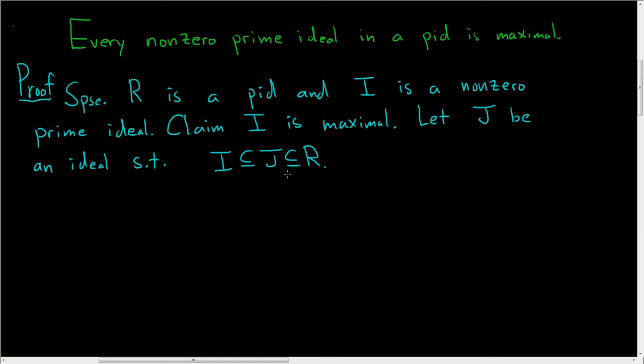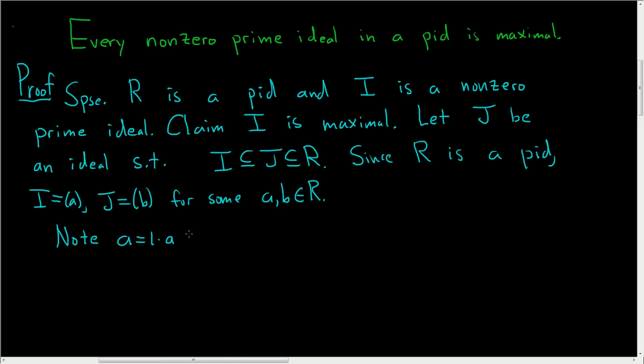So now we're going to use the fact that R is a PID. Since R is a PID, we can write I equal to <a> and J equal to <b> for some a,b in R. So note that a is equal to 1 times a, which is in <a>, which is equal to I, which is contained in J, which is equal to the ideal generated by b. In other words, a is in the ideal generated by b.